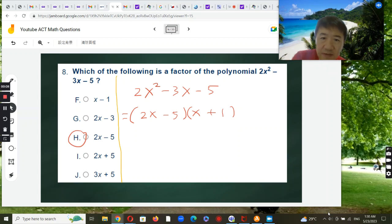Let's work on an ACT math question today. Question number 8: which of the following is a factor of the polynomial 2x² - 3x - 5?